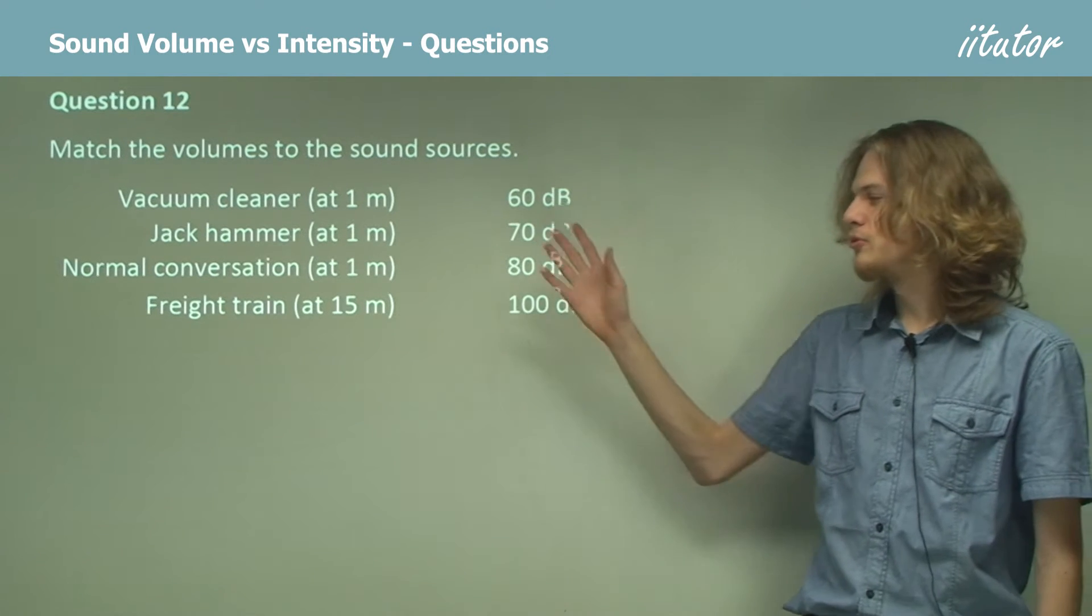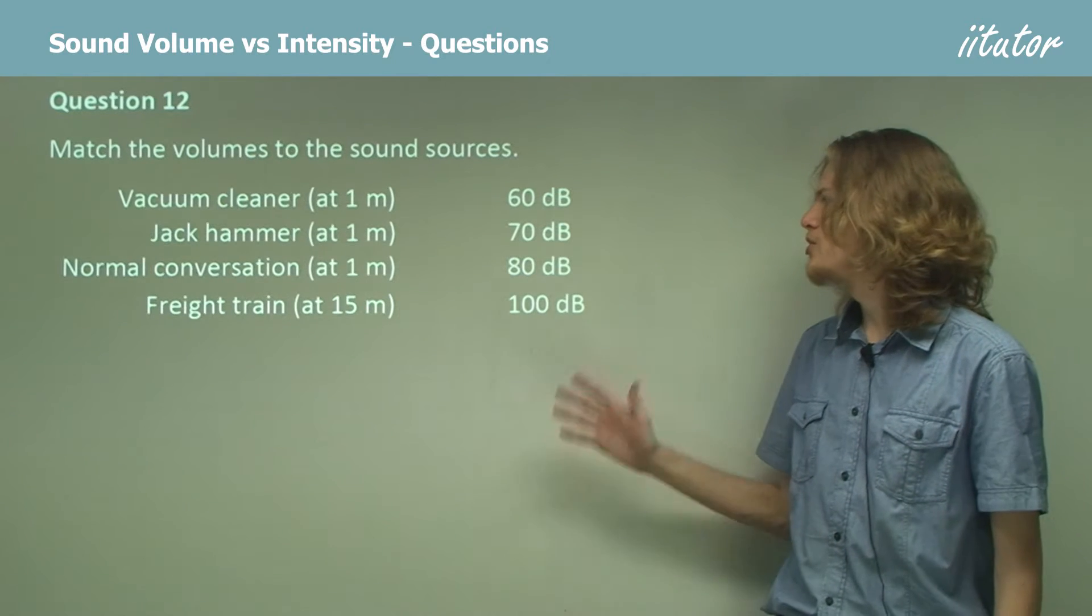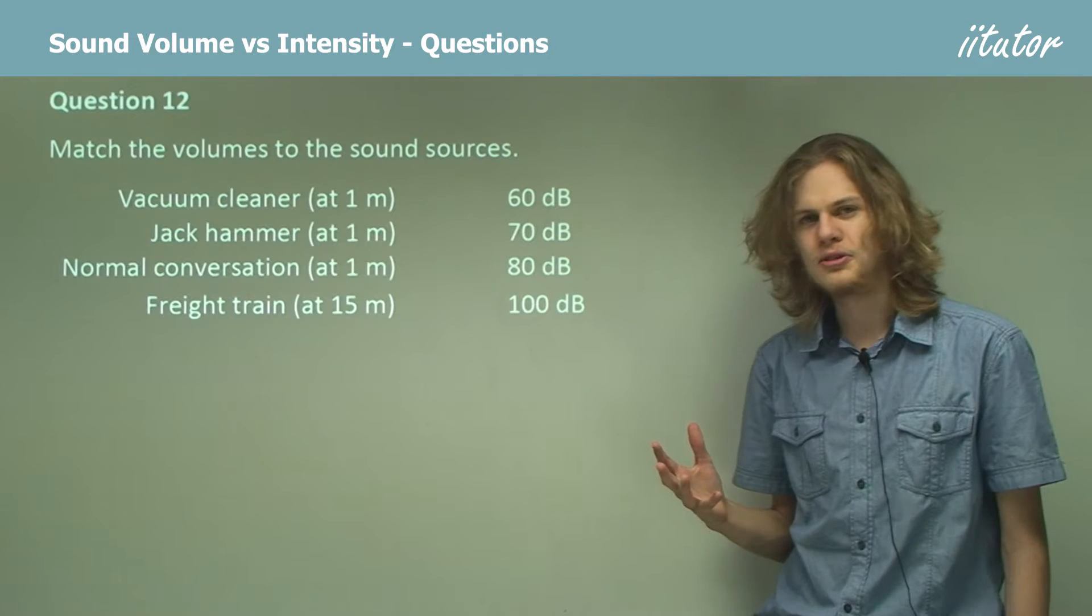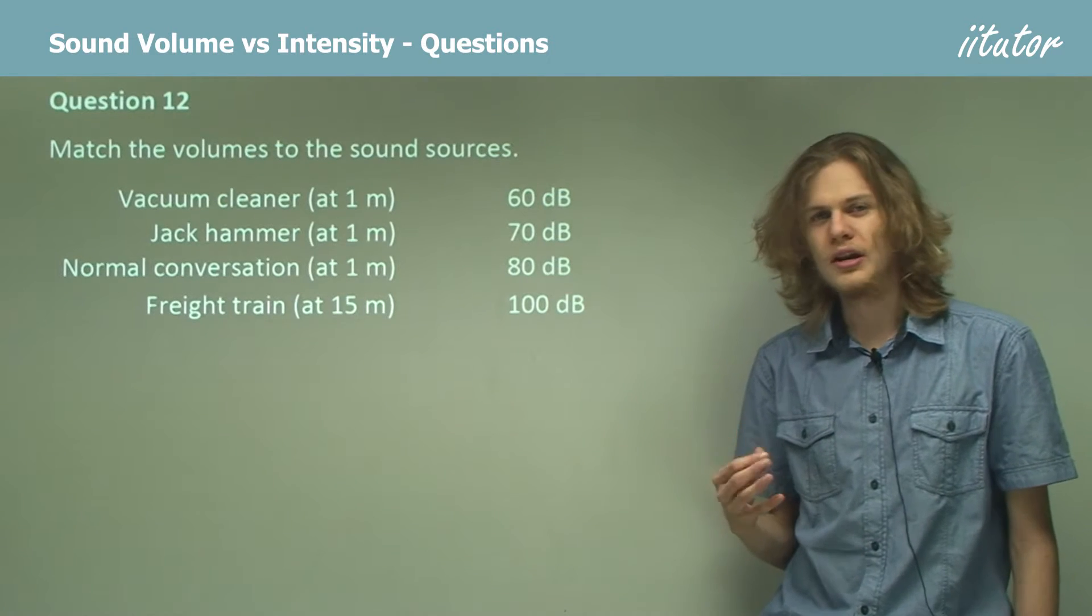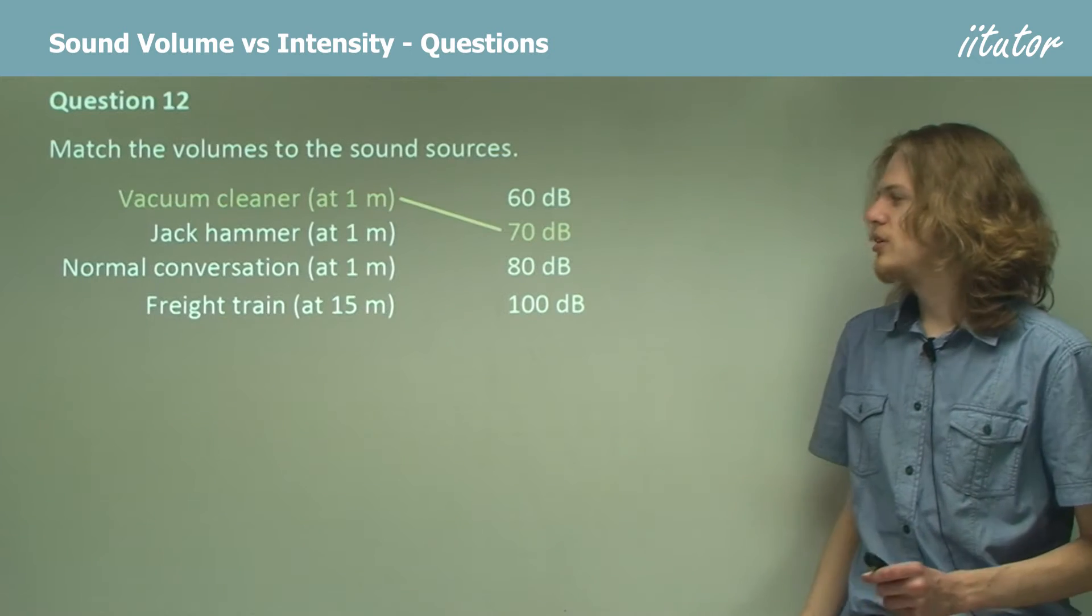So we know that vacuum cleaners are probably going to be louder than conversation, which is likely to be the softest one here. But they're not as loud as a jackhammer, of course. And they're probably quieter than a train, even if that train is 15 meters away. So we can match a vacuum cleaner to 70 decibels.